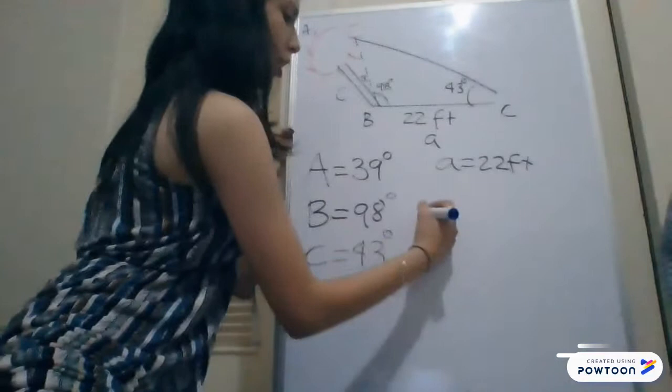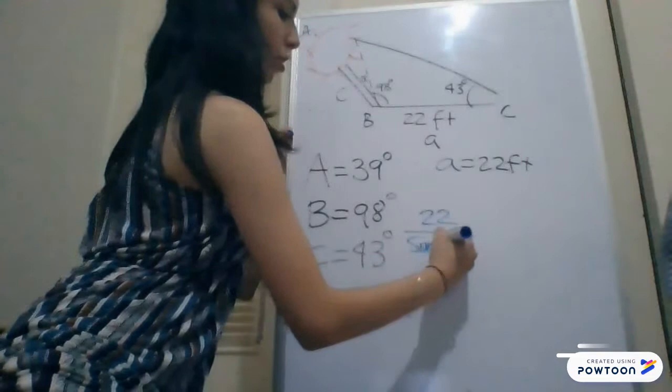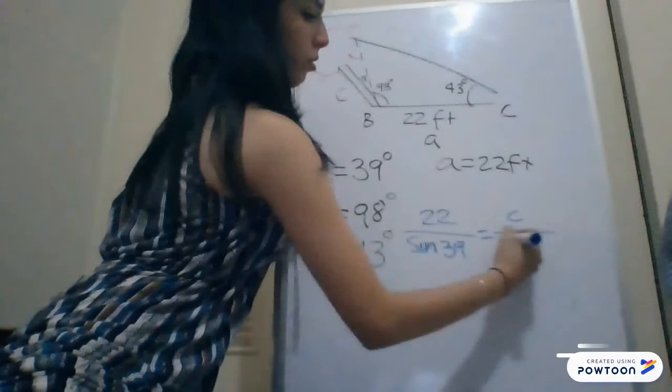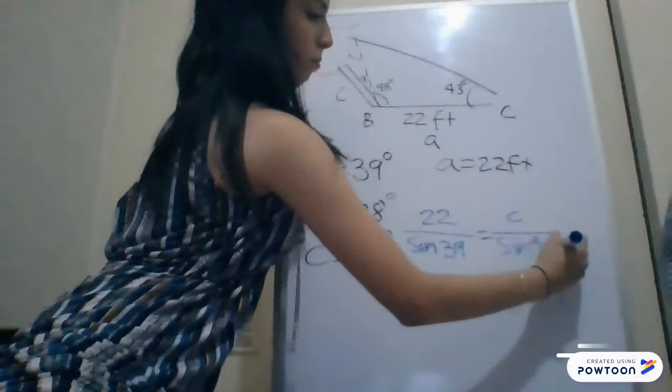So you have side A. So you will use 22 over sine 39, equals C over sine 43.